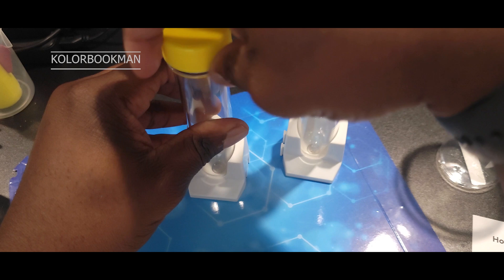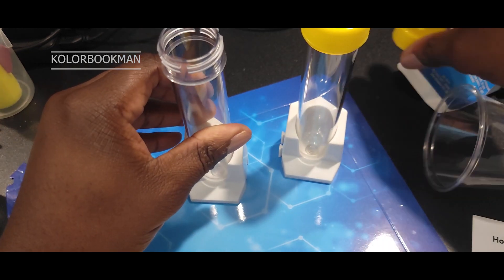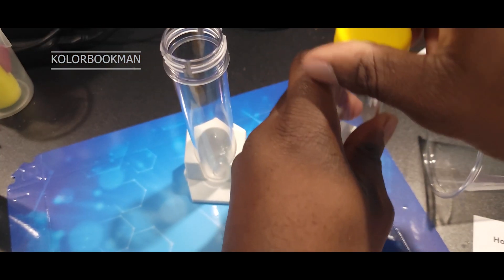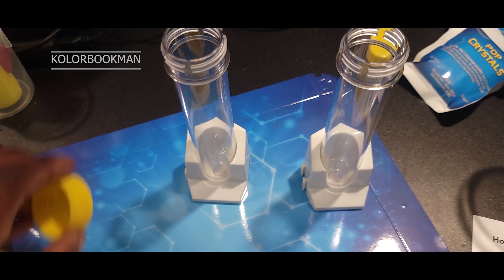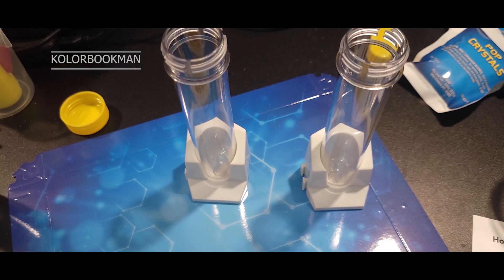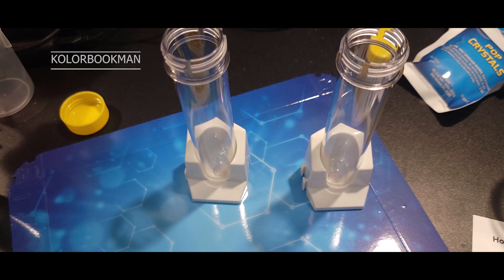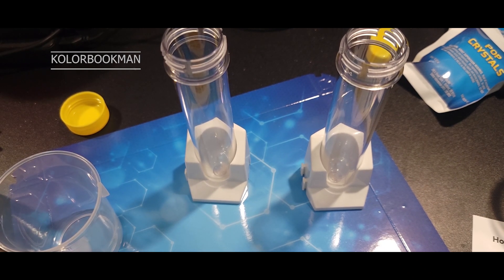So step one, it says open the tops like so and use the beaker to measure 50 ml of water. So we need 50 ml of water to pour into each flask.